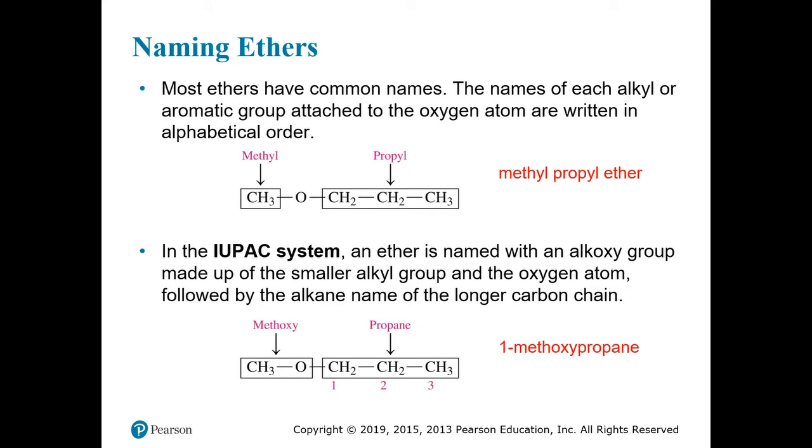We know that ethers have common names, but we're not interested in learning those, so we're just going to skip the common names altogether. In the IUPAC system, in order to name an ether, you have to be able to identify the alkoxy group as being the smaller alkyl group that's connected through the oxygen atom, or sometimes it would be an aromatic ring, but usually it's an alkyl group attached through an oxygen atom.